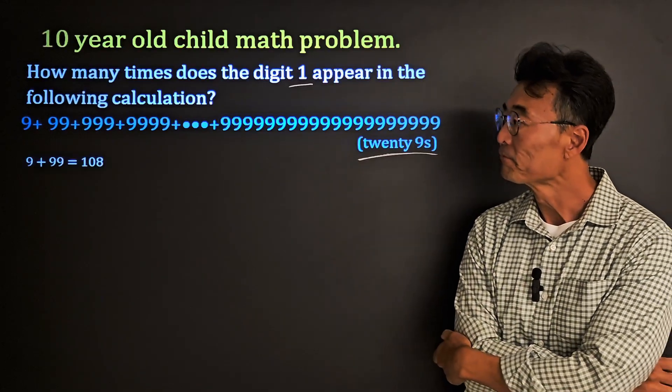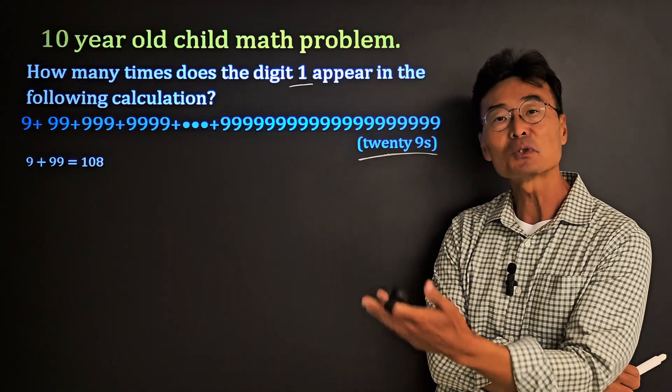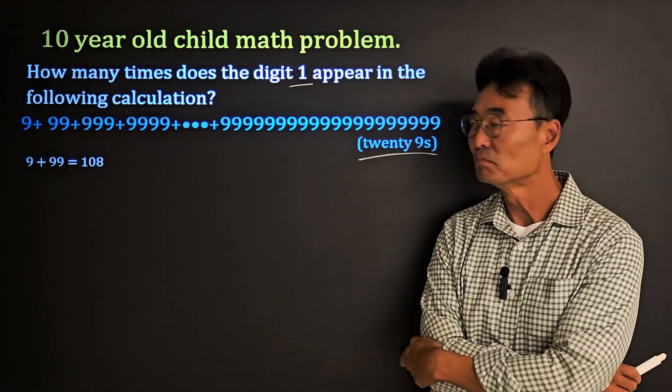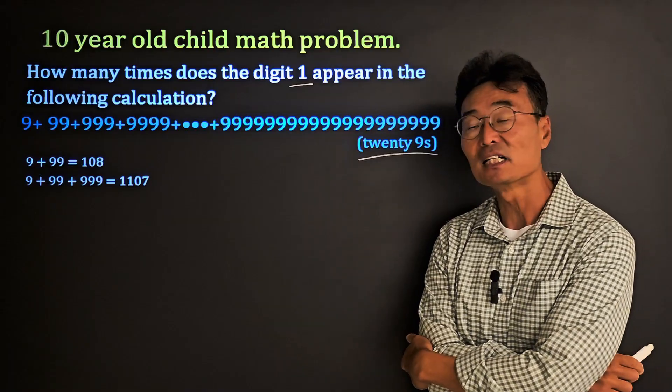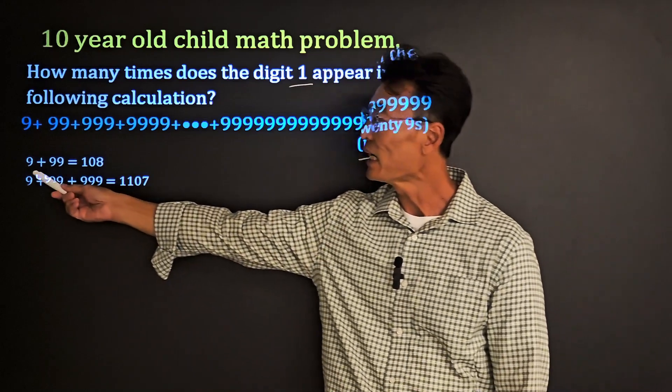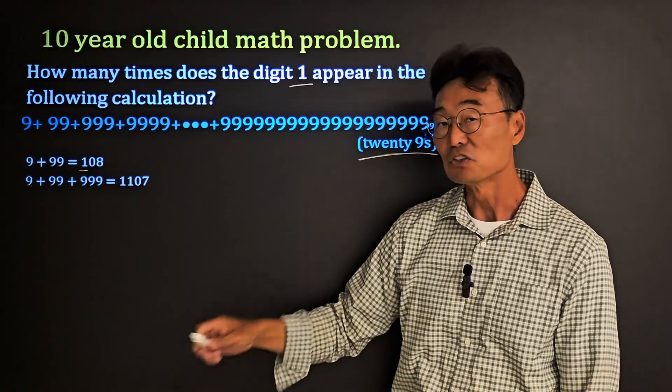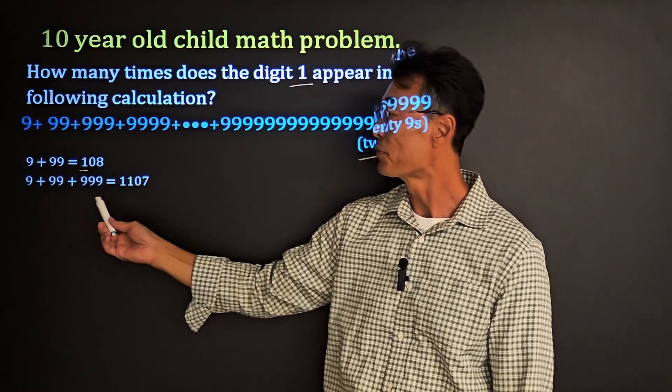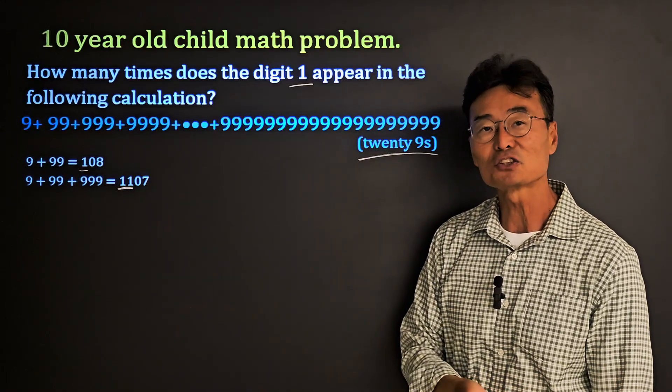Let's try this method. What if we do 9 plus 99 and we get 108? Let's see what's going on, let's see if we see a pattern. If we do the first three numbers 9 plus 99 plus 999 we get 1107. So we're thinking if we add the first two numbers we get one 1, which is one less. If we add the first three numbers we get two ones, again one less.